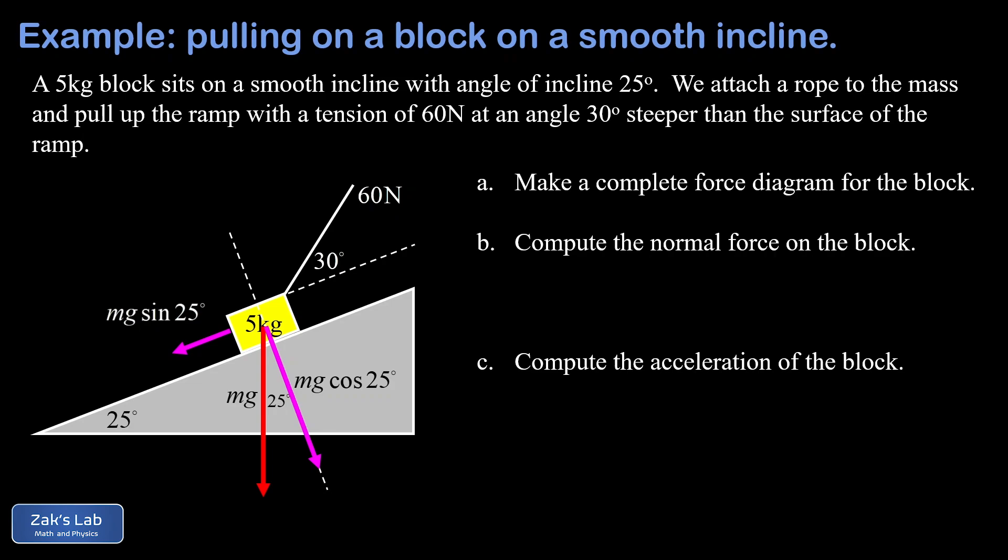So that takes care of everything with gravity, and we'll move on to our 60 newton force where we're pulling with a rope on this thing. So there's our 60 newton force vector, and we want to decompose this one into parallel and perpendicular components. Doing the usual decomposition, we get 60 cosine of 30 degrees for that parallel piece and 60 sine 30 degrees for the perpendicular piece.